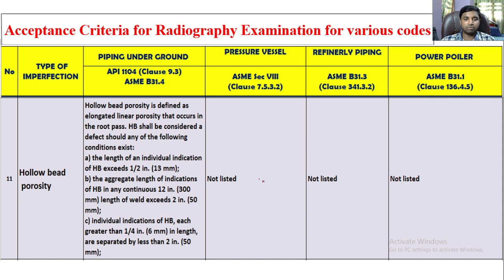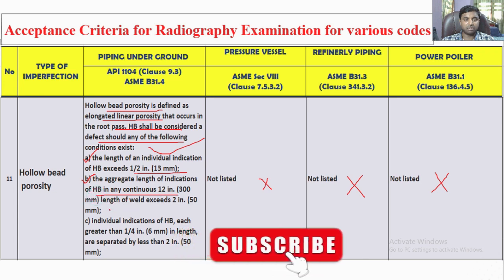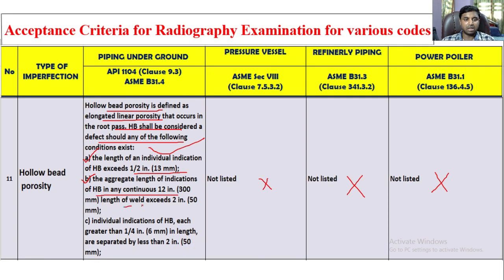Hollow bead (HB) — not listed in most codes, but it is defined only in API 1104, clause 9.3. The HB shall be considered a defect if any of the following conditions exist: individual indication length exceeds 13 mm; aggregate length of HB indications in any 12-inch (300 mm) length exceeds 50 mm. Another condition: individual indication of HB greater than 6 mm in length, separated by less than 250 mm, is also considered a defect and will be rejected.